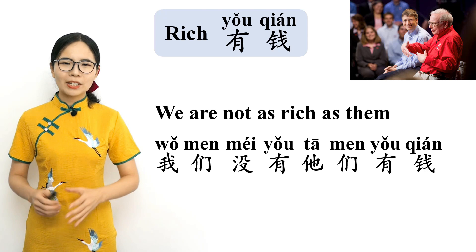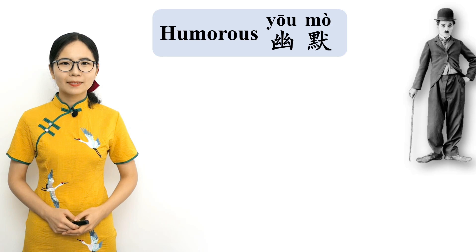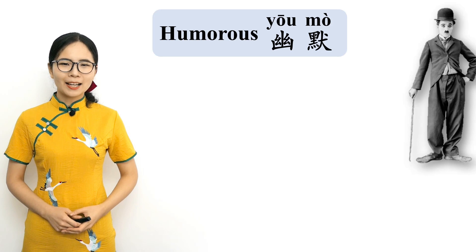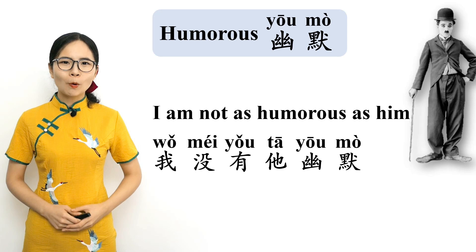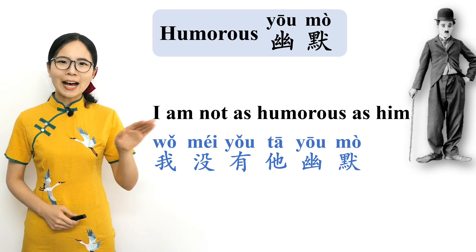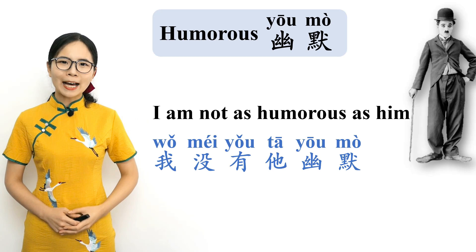Humorous in Chinese is 幽默. Please repeat after me. 幽默 — humorous. How do you say 'I am not as humorous as him'? Correct. 我没有他幽默. Please repeat after me. 我没有他幽默. I am not as humorous as him.